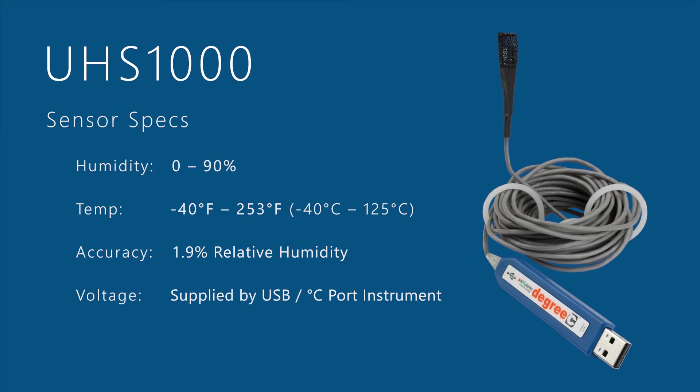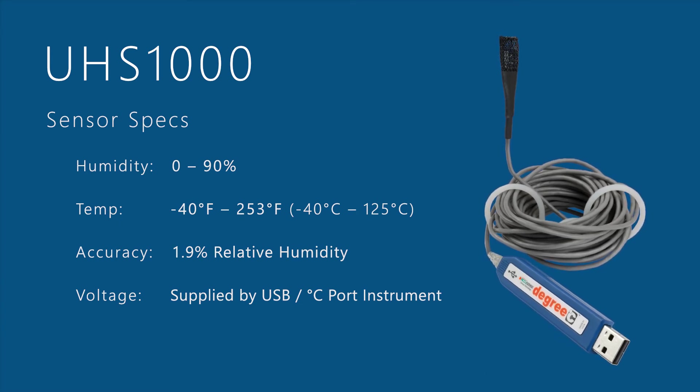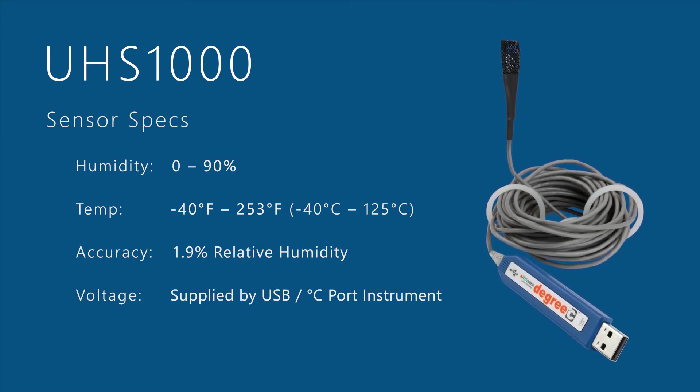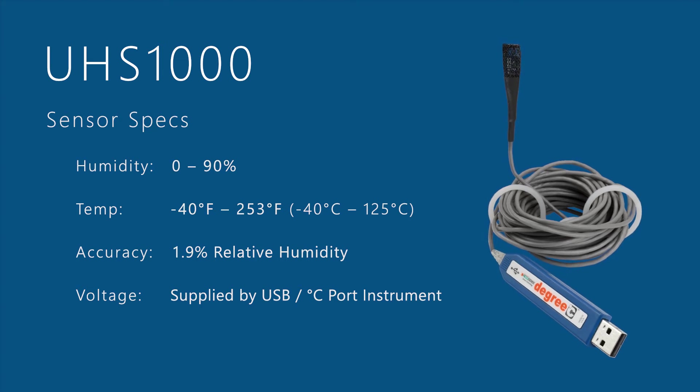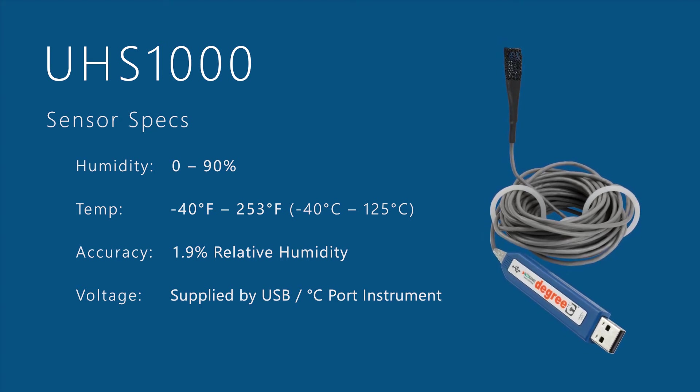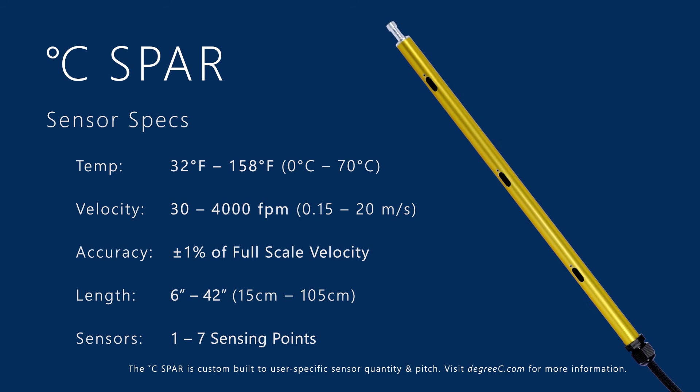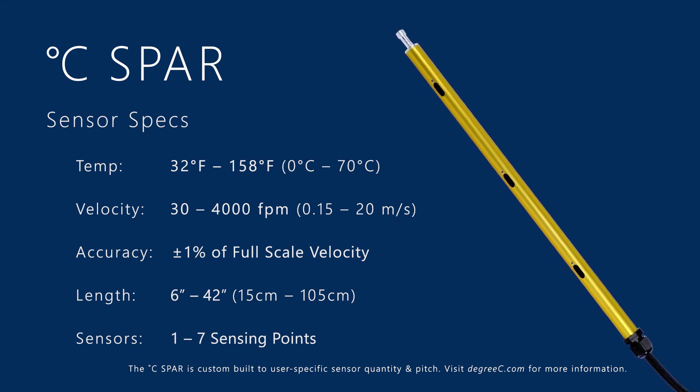Pull relative humidity and ambient air temperature simultaneously with the UHS-1000 for best real-time compensation of air velocity readings. Save time by eliminating complex fixturing of multi-point probes and sensor heads with the C-Spar sensor pole array.